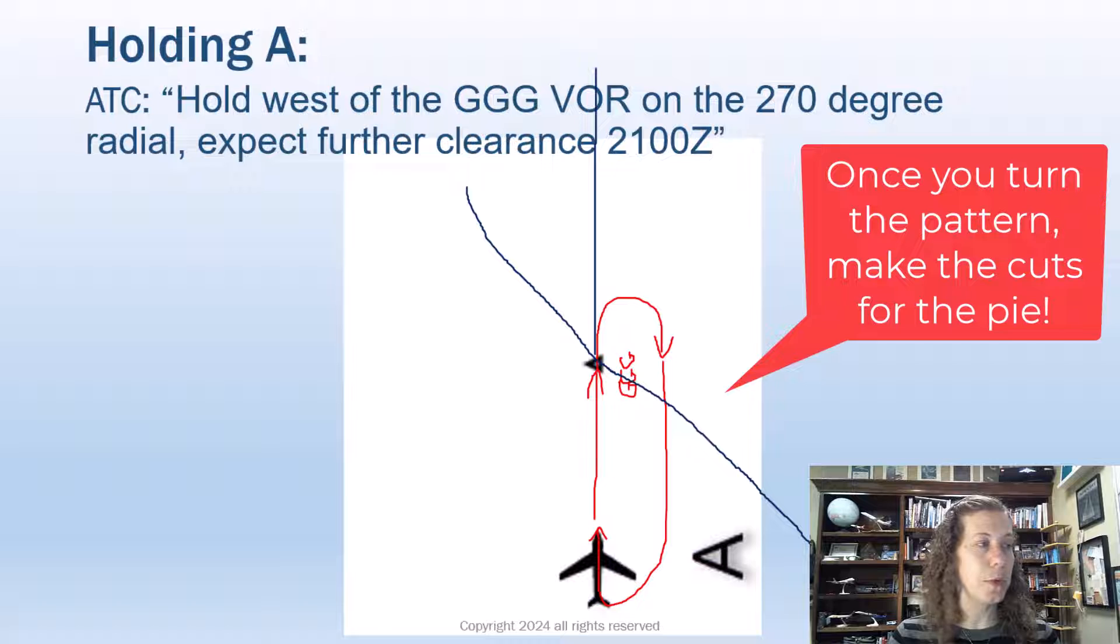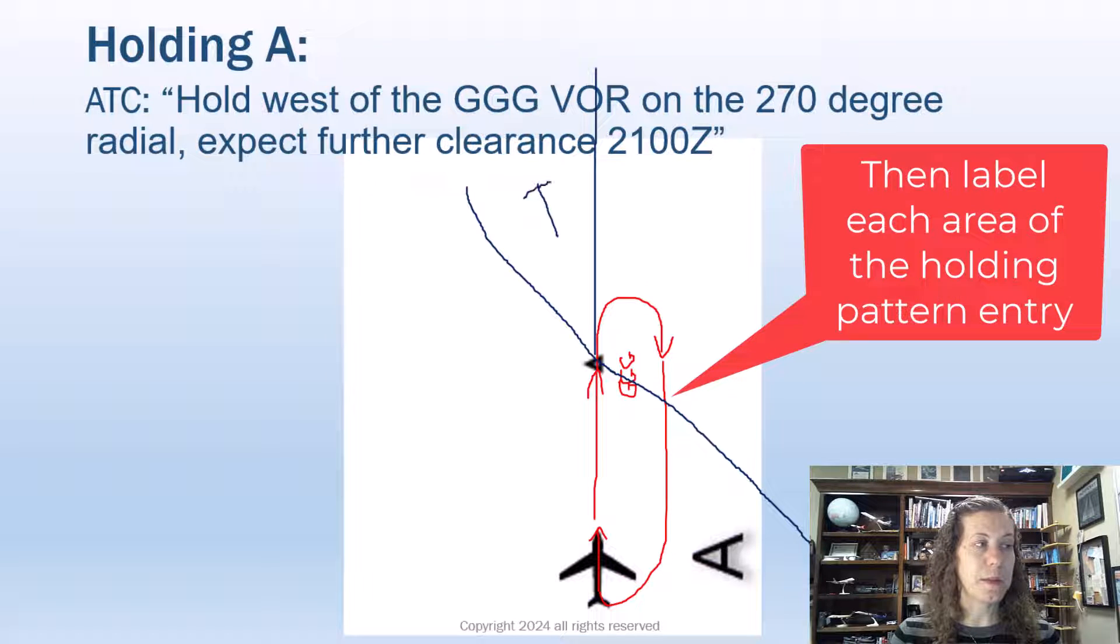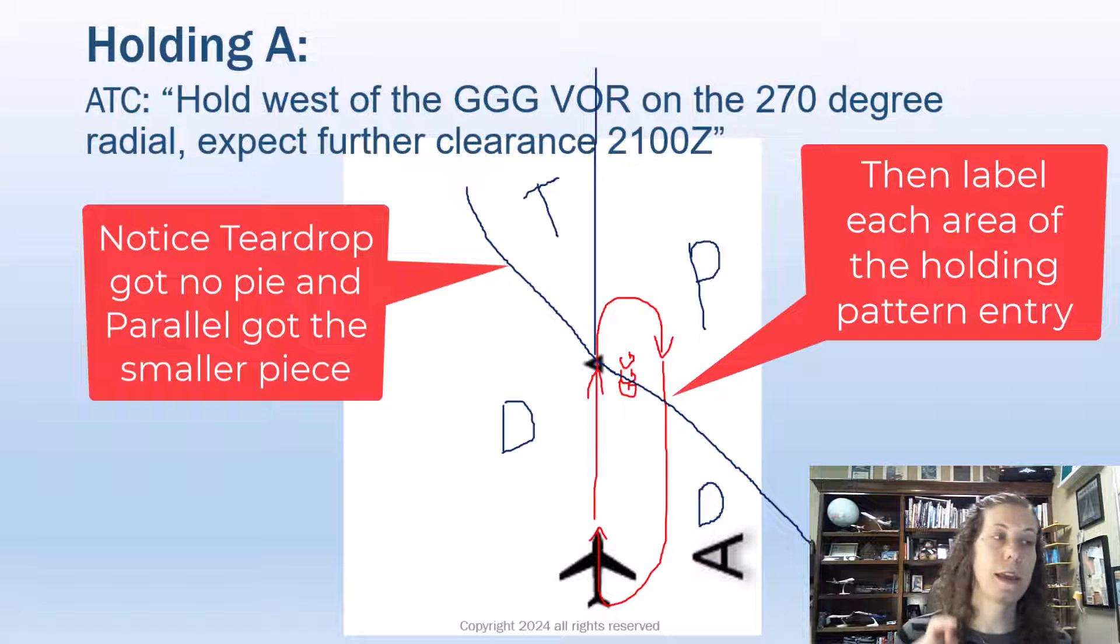Draw a line about through the pie like that. And if I didn't get any pie, I'm sad, so I cry a teardrop. There's teardrop. If I got the smaller piece of the pie, I'm in the parallel entry area. And if I got the big piece of the pie, I'm in either of these sectors for the direct entry. So in this case, I can see that I can fly a direct entry to my holding pattern.